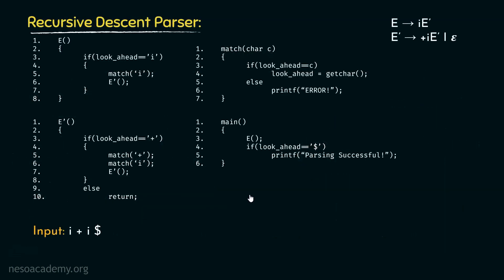This was our code for our recursive descent parser. This is the main function. This is the match function which helps us with the terminal symbols. This is the function E which mirrors the start symbol of the grammar. And this one here is the function E' which happens to be a mirror image of the non-terminal E'.